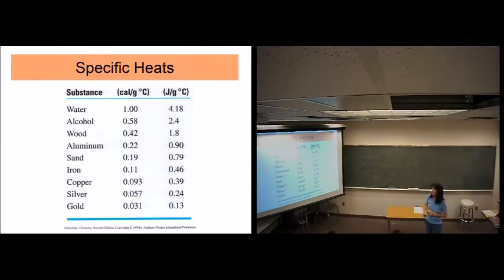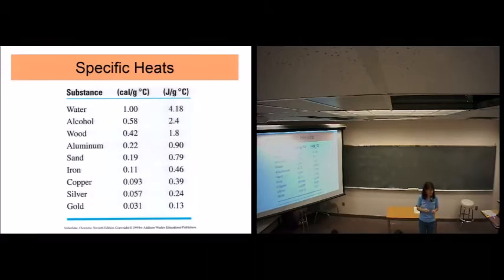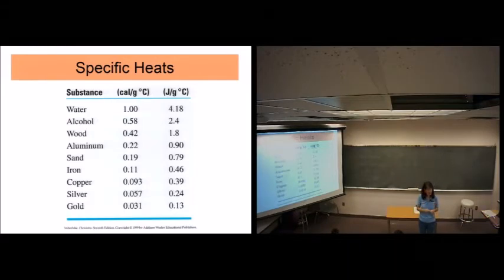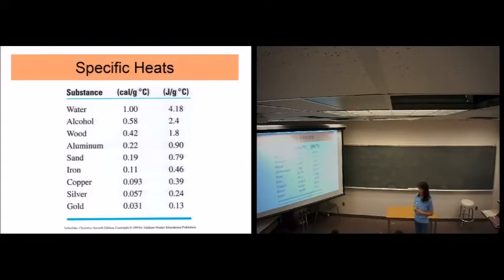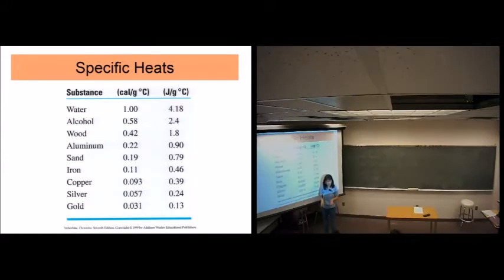If I compare iron to aluminum — if I give the same amount of heat to both, which one goes to a higher temperature first? Iron, because it has a smaller specific heat — it's like the little pebble. Aluminum has a higher specific heat, so it's more like the boulder. The same applies to sand versus wood at the beach — sand heats up much faster, which is why it's so hot underfoot.